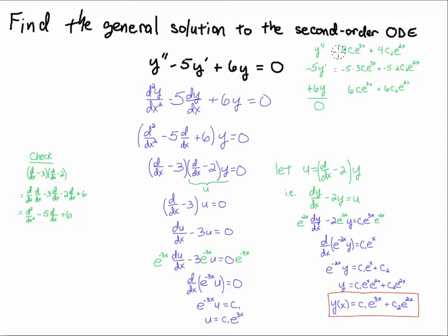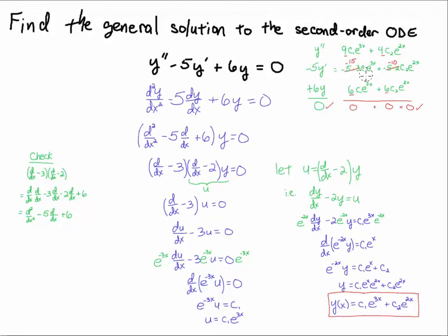For the second derivative: 3 from the first derivative times another 3 gives 9, and 2 times 2 gives 4. Now: minus 5 times 3 is minus 15, minus 5 times 2 is minus 10. Adding: 6 + 9 = 15, and 15 − 15 = 0; 6 + 4 = 10, and 10 − 10 = 0. Check — it does solve the ODE, and this is the same solution as previously obtained.